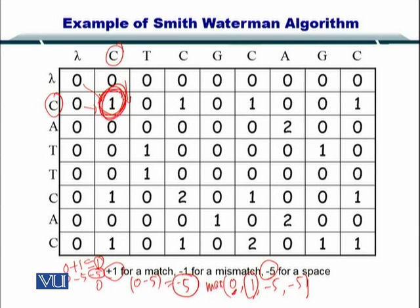So once you have computed the entire matrix, the next thing that you need to do is find the highest scores. So in this case, the highest scores are 2 and they can be found at these positions.